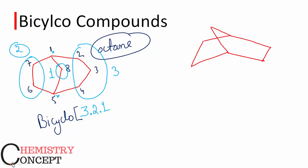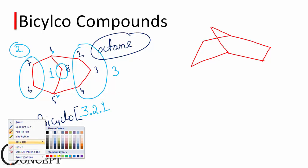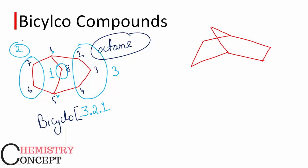In that square bracket I write 3.2.1. What do these numbers indicate? These numbers indicate the number of carbon atoms in the different portions of the compound, written in descending order. Bracket closed, and the name is octane — bicyclo[3.2.1]octane.